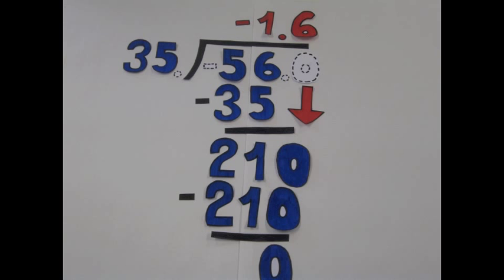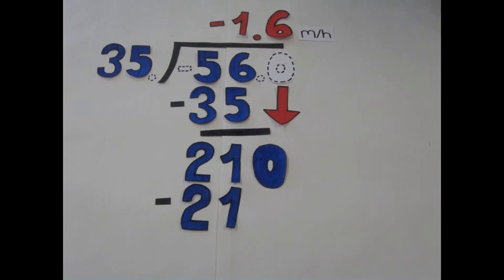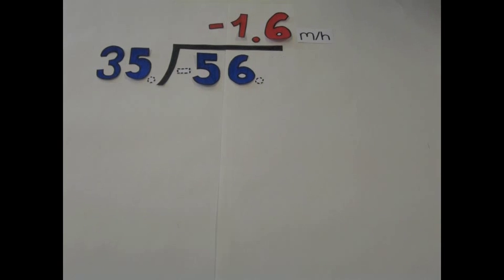The mean change in the water level was negative 1.6 meters per hour. Now you know how to divide rational numbers.